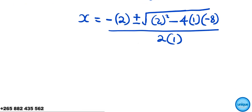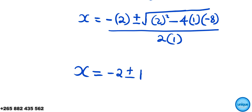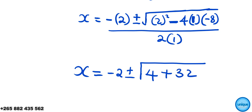So we have x equals negative 2 plus or minus the square root of 4 plus 32, divided by 2. That gives x equals negative 2 plus or minus the square root of 36, divided by 2. The square root of 36 is 6.